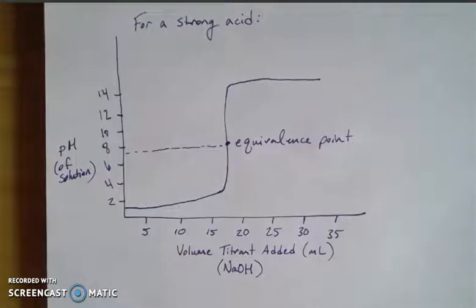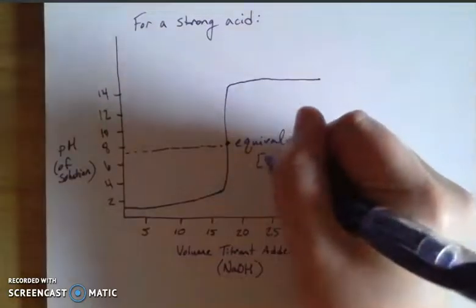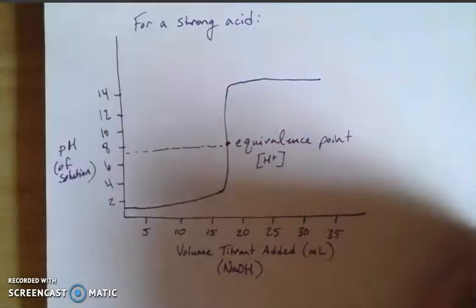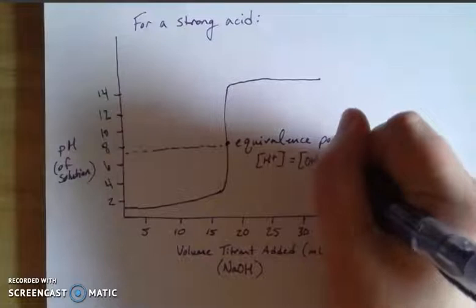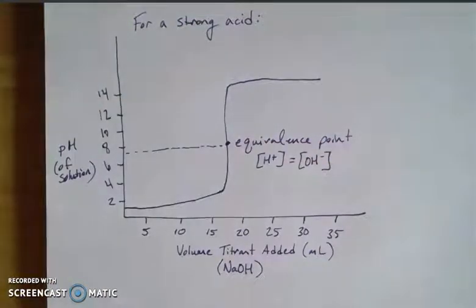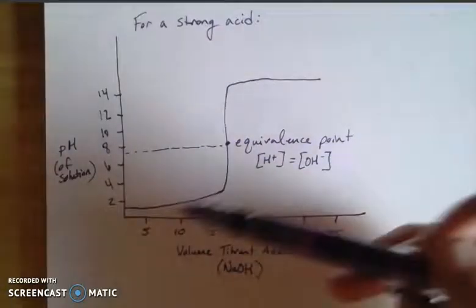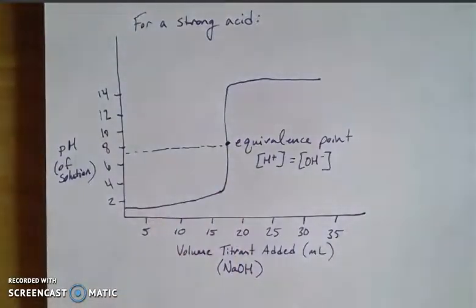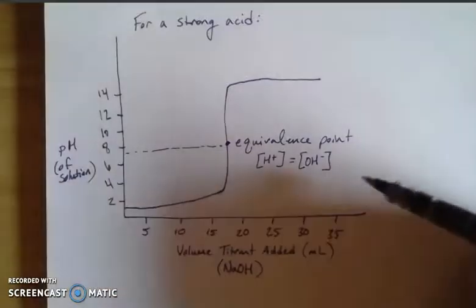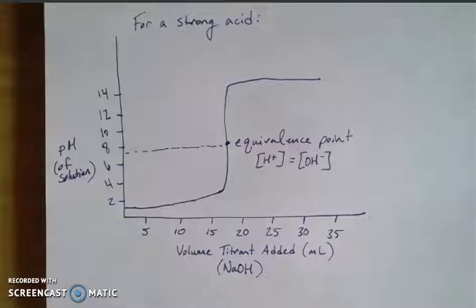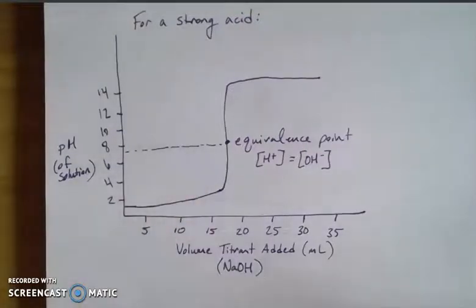The equivalence point on a titration curve is where the concentration of your hydrogen — or hydronium, since we're thinking about this in solution — is equal to the concentration of your hydroxide. Functionally, that means I have a neutral pH if it's a strong acid/base reaction, giving a one-to-one ratio of hydrogen to hydroxide. At the equivalence point they're making as much water as possible — this is neutralization, an acid-base neutralization reaction. We can use indicators like phenolphthalein to visualize the equivalence point.